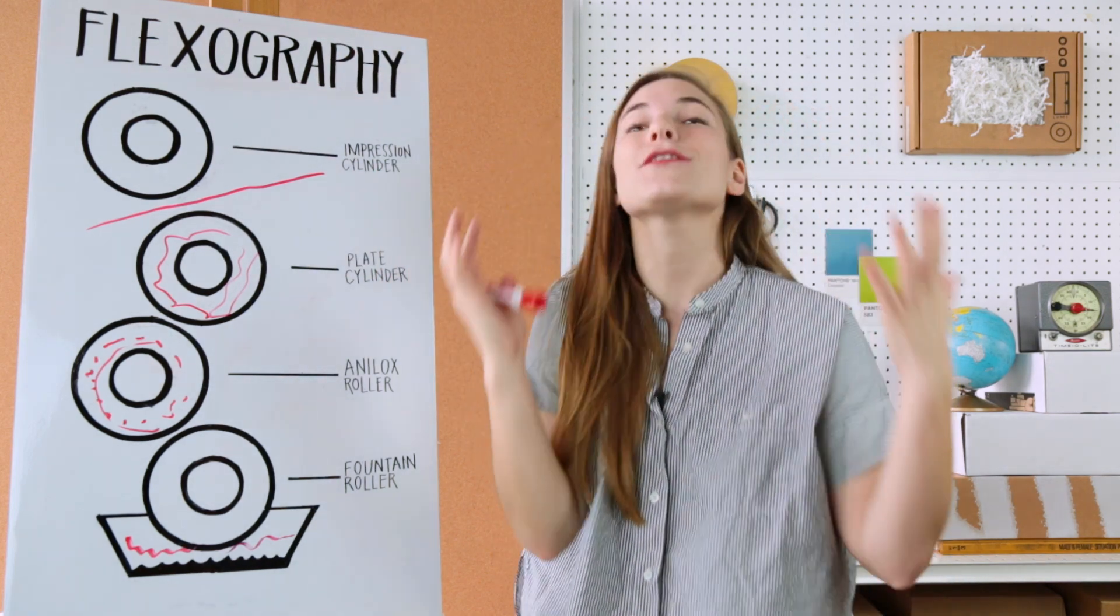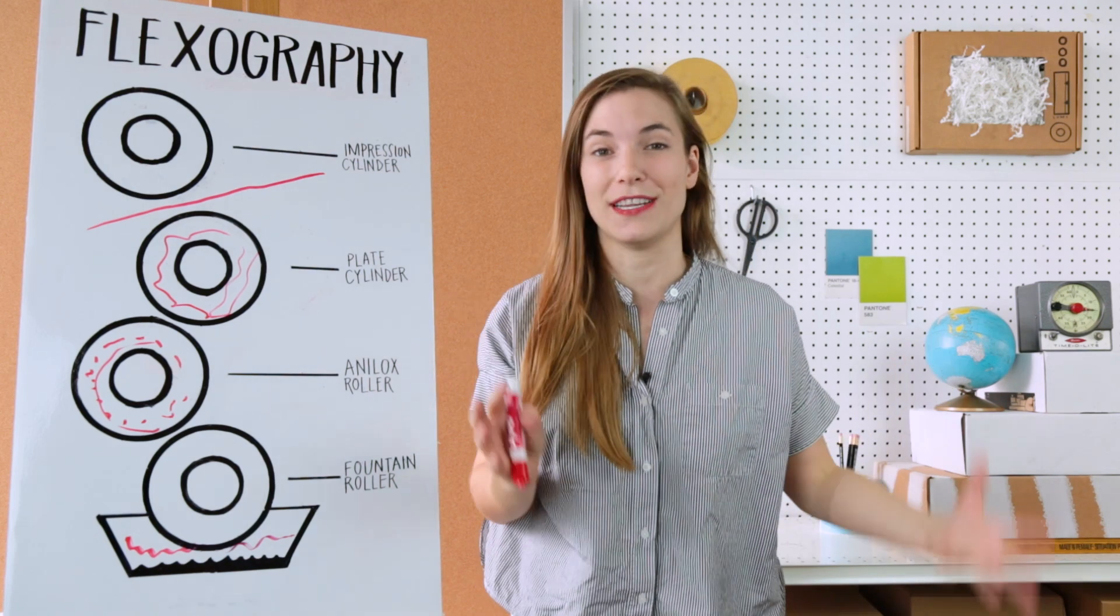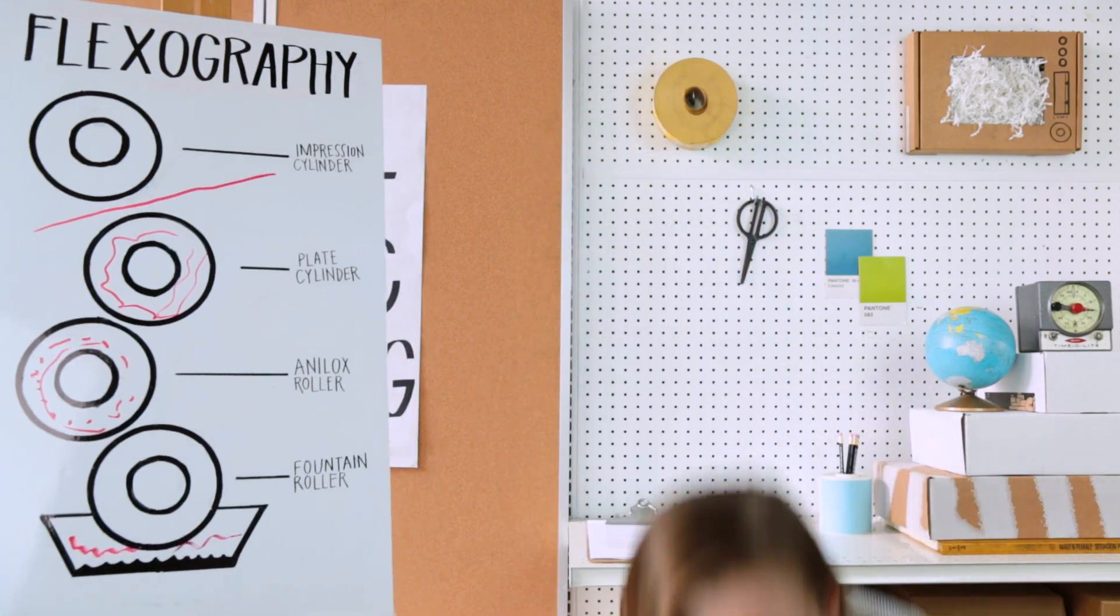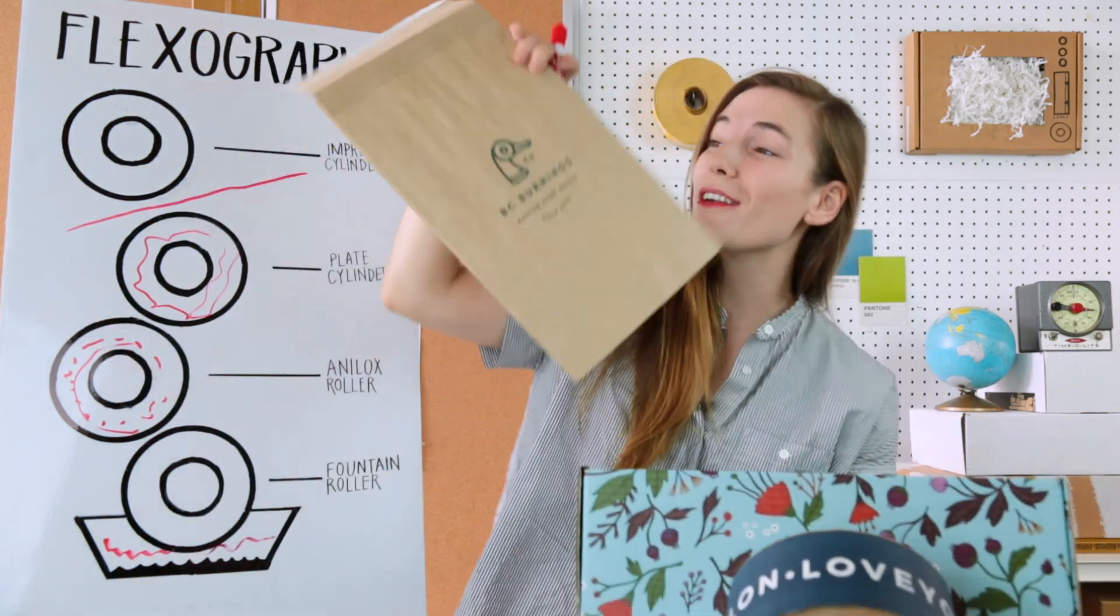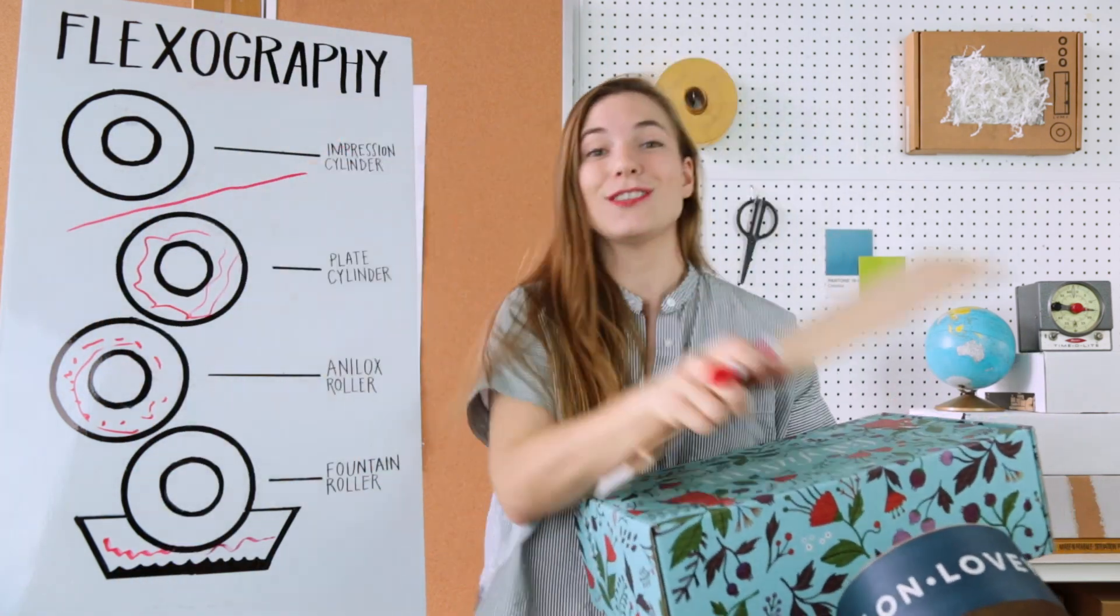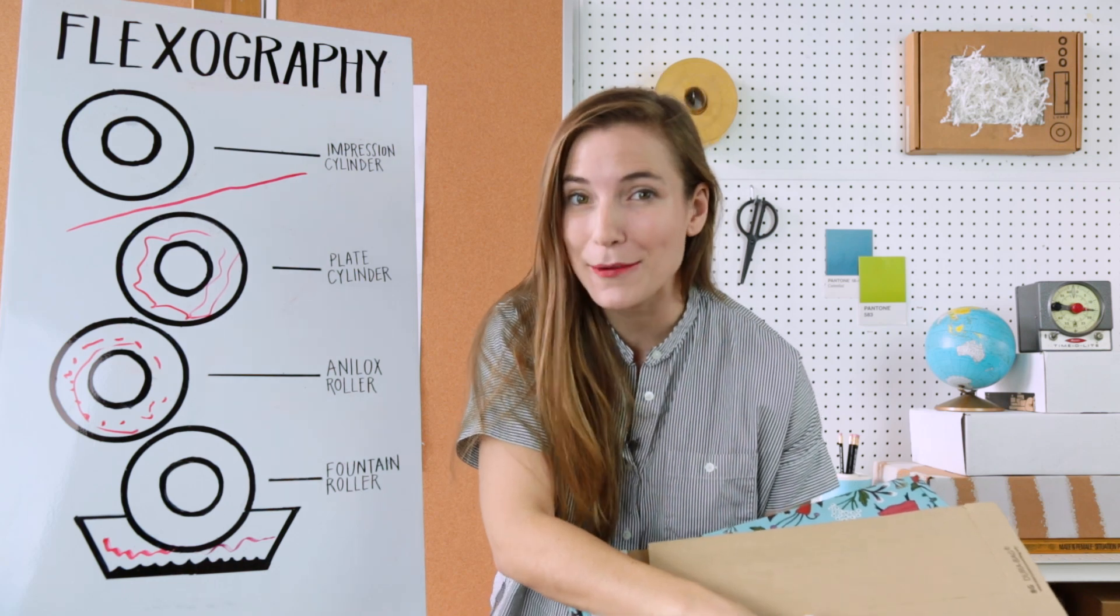Now, it's not just for corrugate. You can make all sorts of things with this process, like tape, or tissue paper, or even awesome craft mailers. So that's flexographic printing.